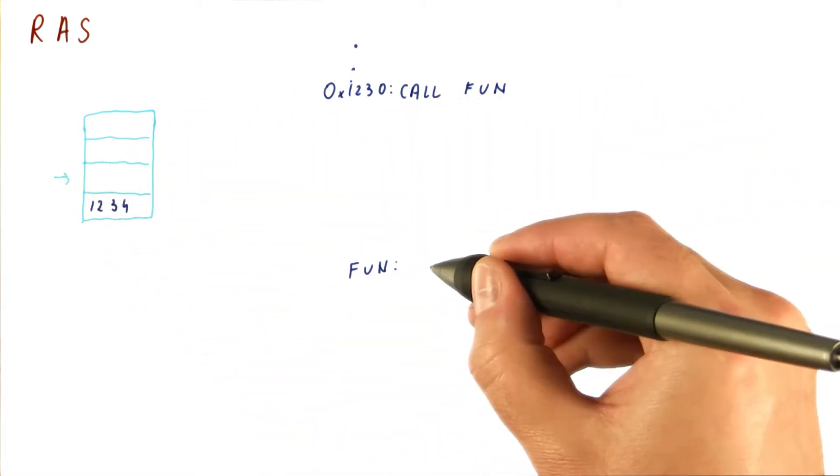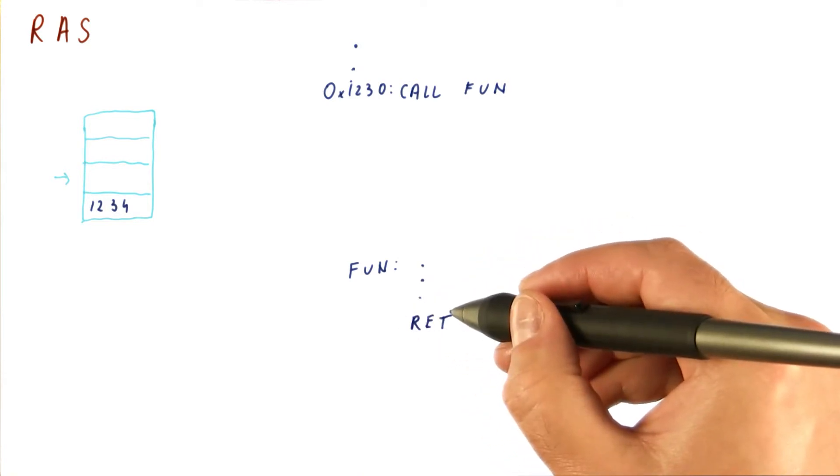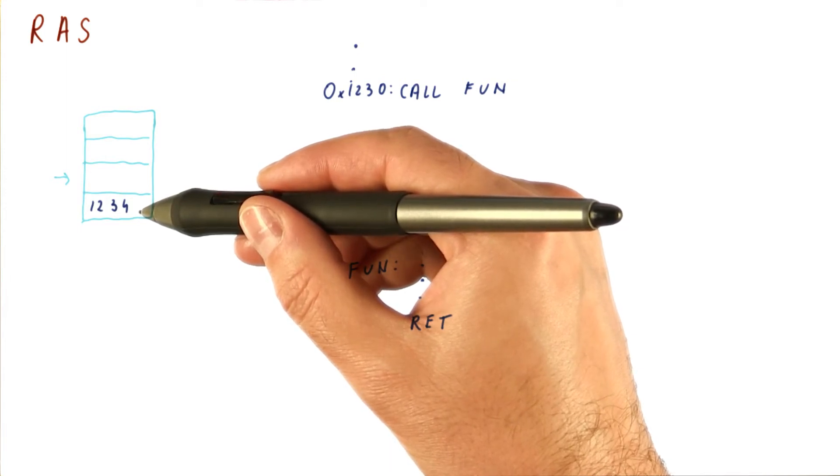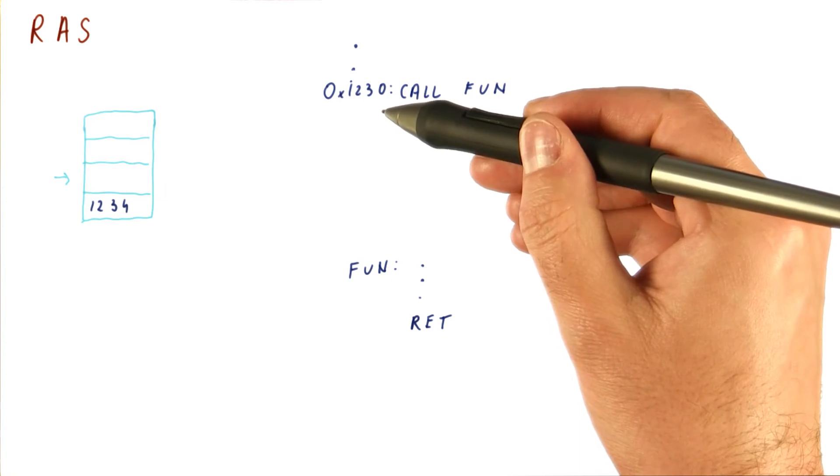We move the pointer. In the function, when we encounter the return instruction, we will pop from this return address stack and use the 1234 to return, and in that case get the correct target address.